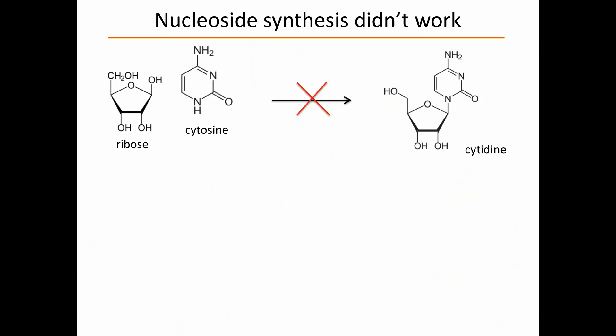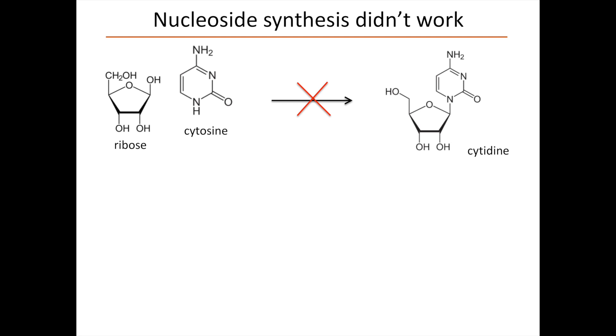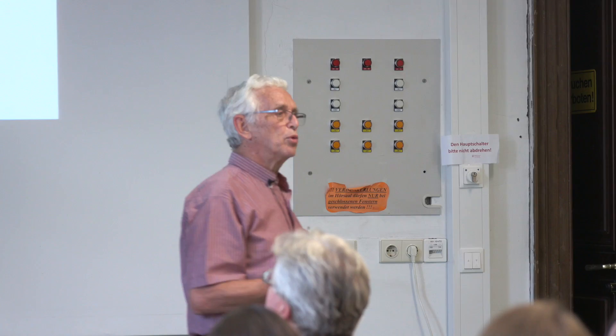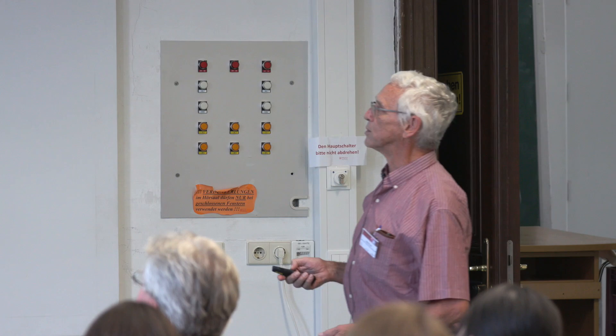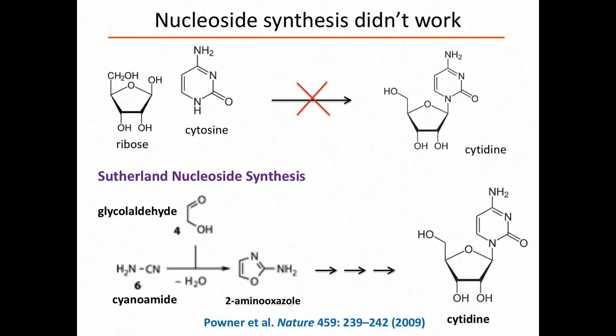But then we ran into a problem: when you try to join ribose to cytosine to make cytidine — a nucleoside — it didn't work. They wouldn't join up. This remained a problem for some time until John Sutherland came up with nothing less than a brilliant synthesis, published in Nature some ten years ago, for making cytidine.